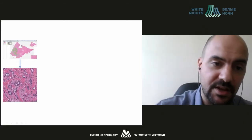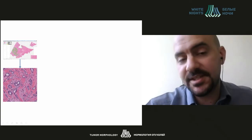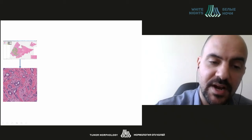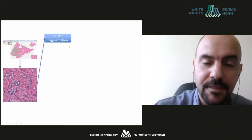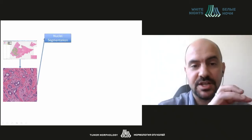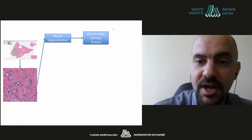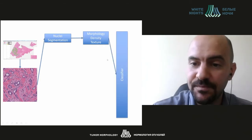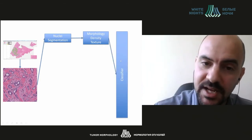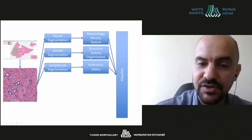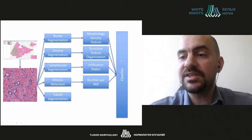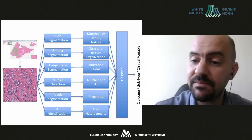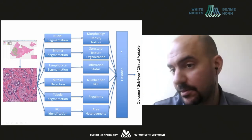We take the whole slide image, have a pathologist annotate the region of interest, extract a higher magnification view, perform nuclei segmentation to identify where cells are, then extract precise features associated with morphology, density, and texture, placing that information inside a machine learning classifier. We do the same with stroma features, lymphocyte features, and so on — essentially every piece of information that may be prognostic is placed in a classifier to associate with an outcome, subtype, or clinical variable of interest.